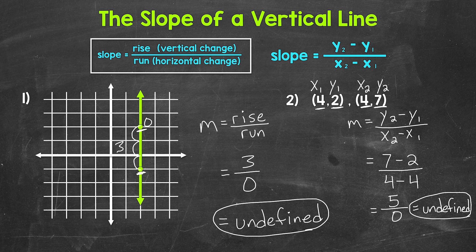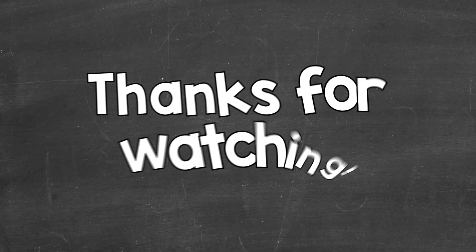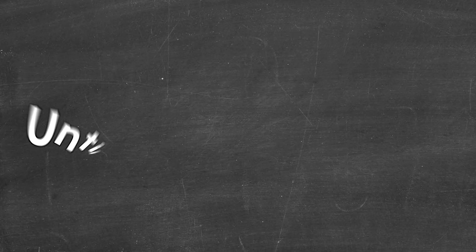Looking at the coordinates, we can see the same x-coordinate of four in both points, so there's no horizontal change — this is a vertical line with an undefined slope. There are the slopes of horizontal and vertical lines: horizontal lines have a slope of zero, vertical lines have an undefined slope. I hope that helped. Thanks so much for watching. Until next time, peace.